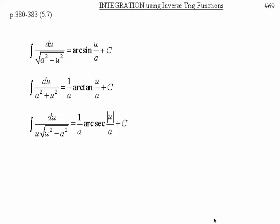In section 5.7, our objective is to integrate using inverse trig functions. Last time in 5.6, we took the derivative of inverse trig functions, so this time we're going backwards — taking the integral to get to inverse trig functions. These three integrals are rational functions, and we now have another strategy: sometimes the rational function will be of one of three forms that give us an inverse trig function. We have to learn to recognize these three forms.